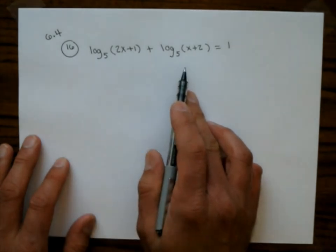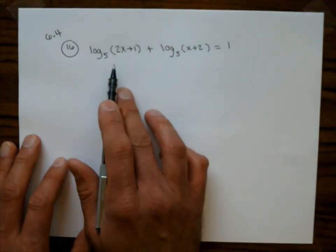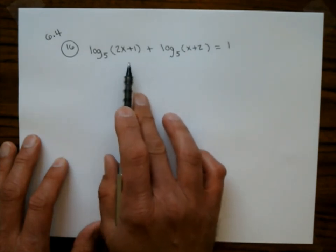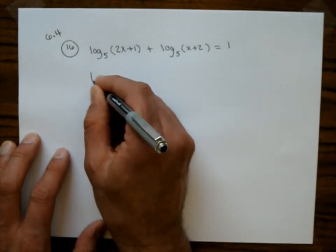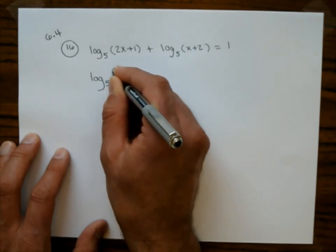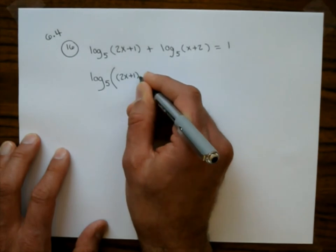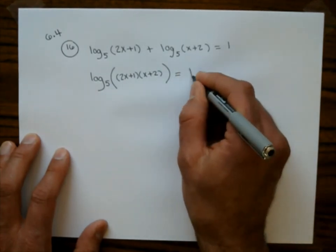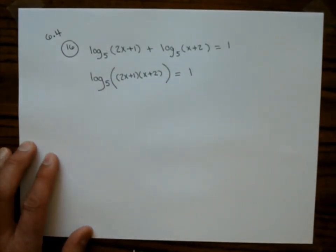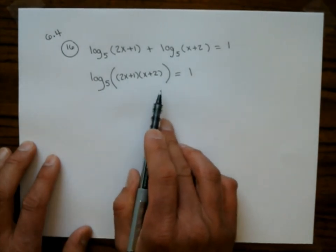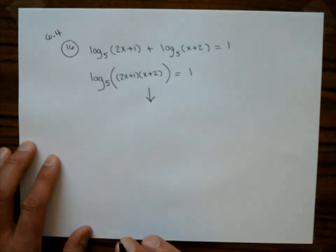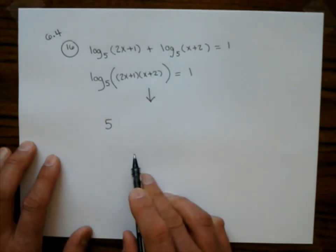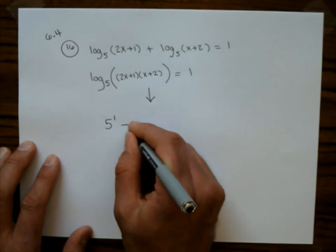This is not a basic log equation — we have two logs on the left. Using the product rule, we can combine them: log base 5 of (2x plus 1)(x plus 2) equals 1. Now it's a basic log equation, so convert from log form to exponential form. The base is 5, the exponent is 1, so 5 to the 1 equals (2x plus 1)(x plus 2).